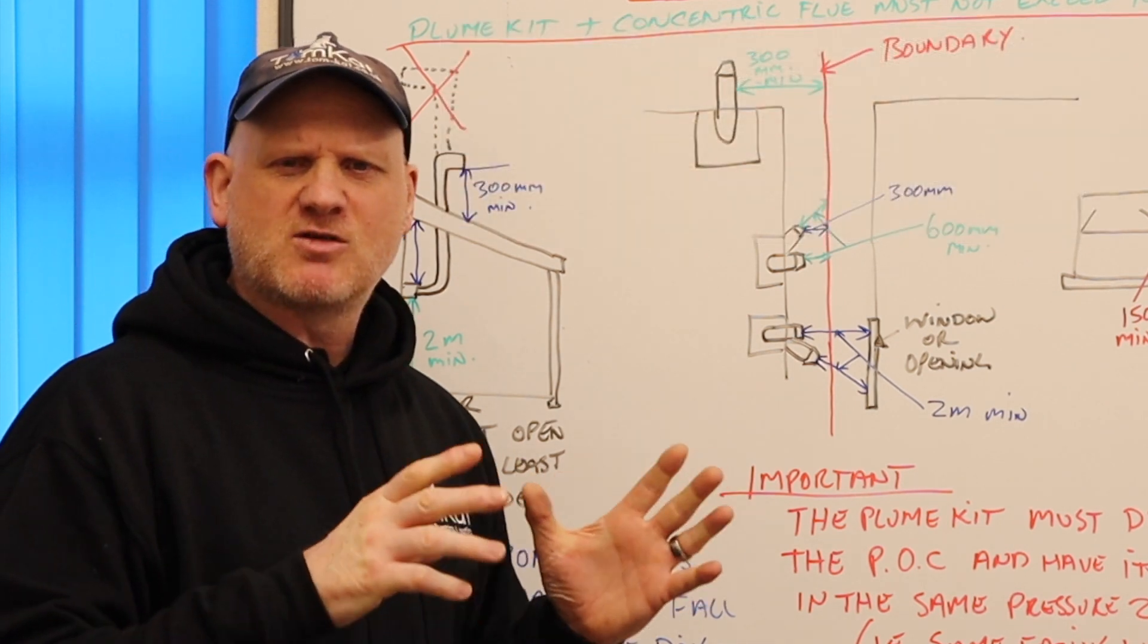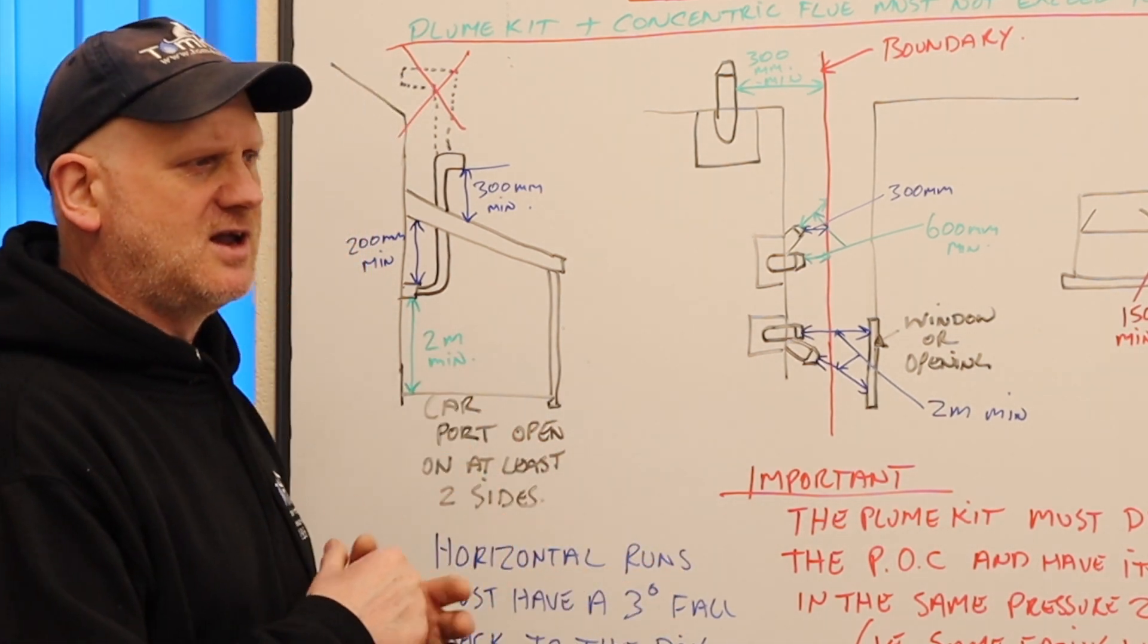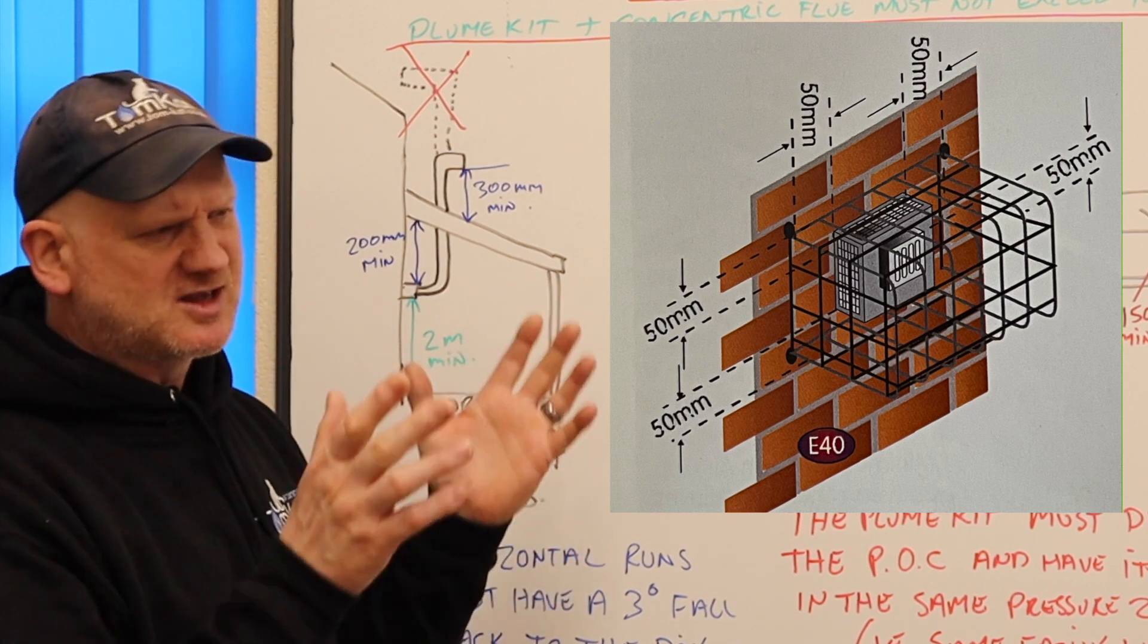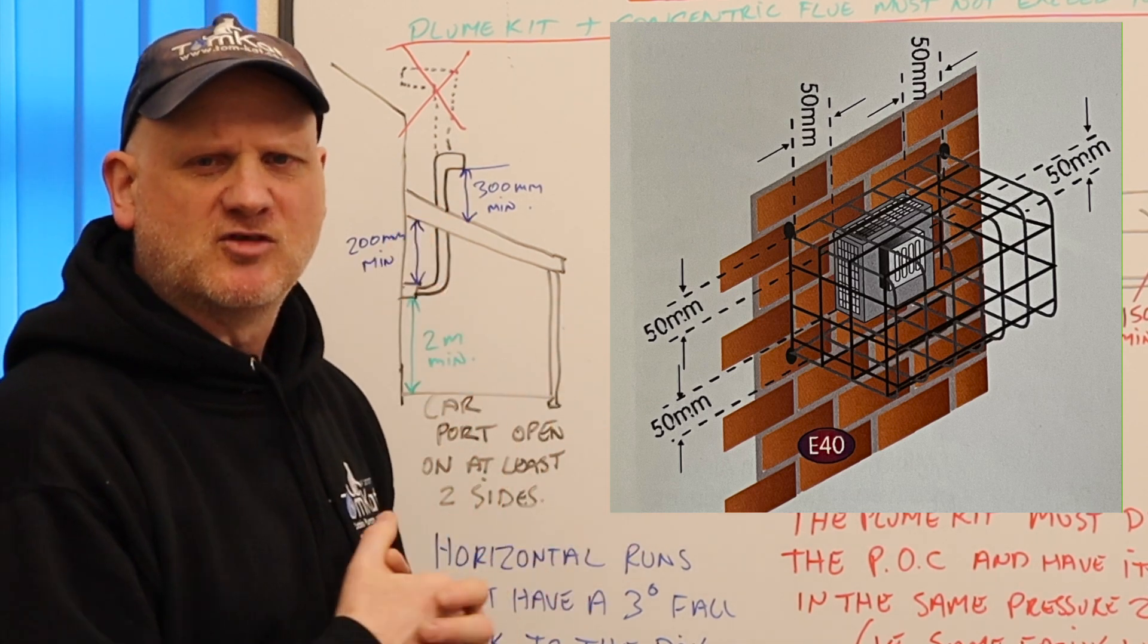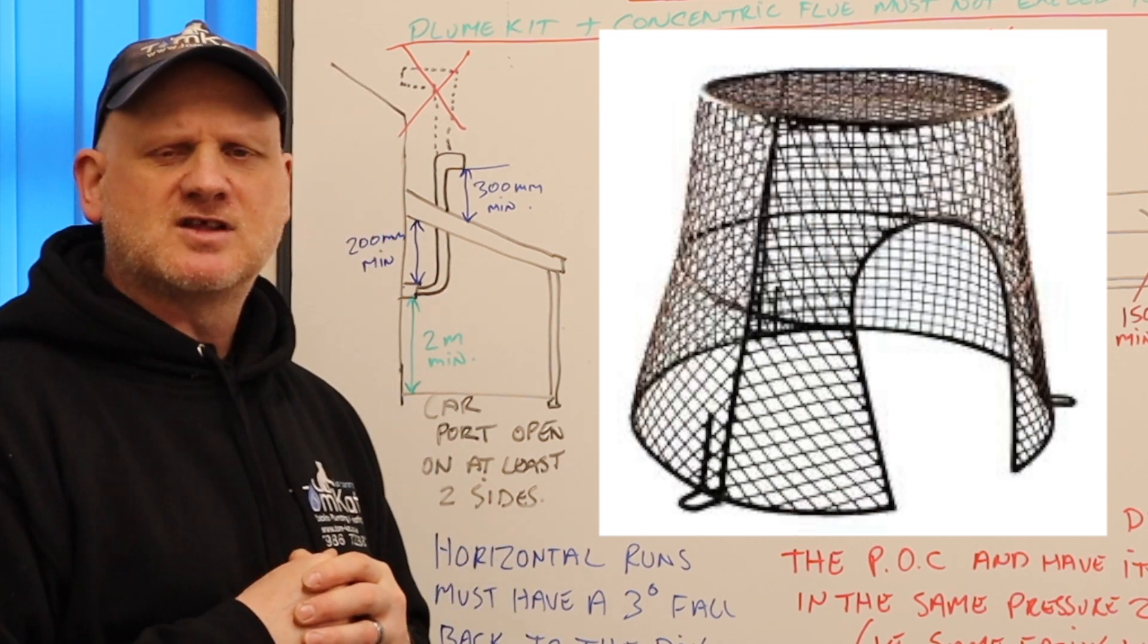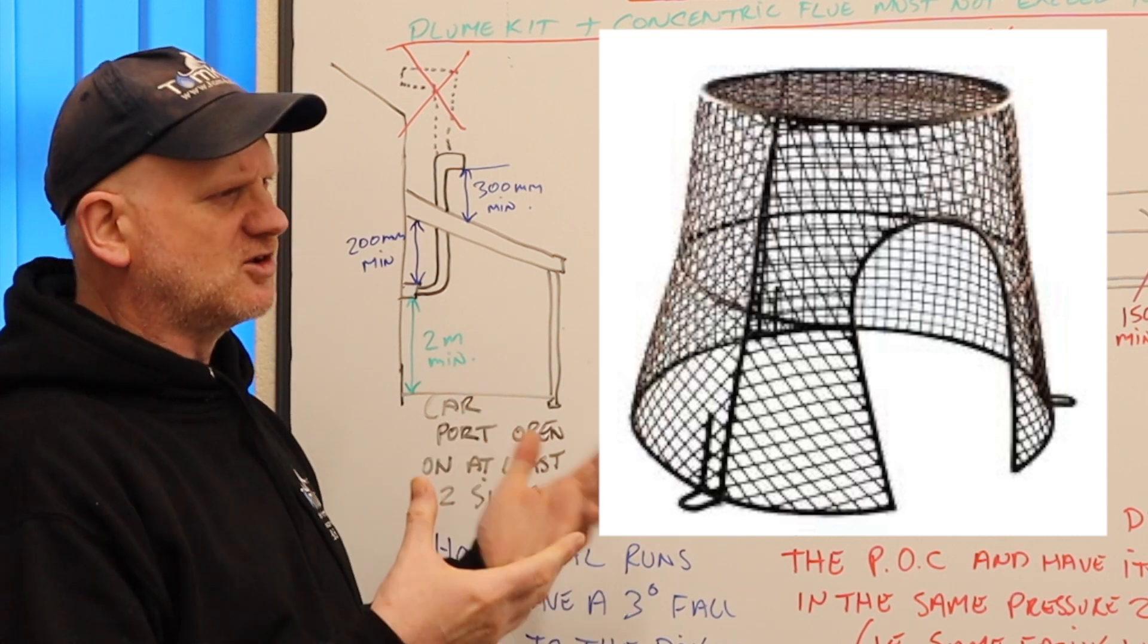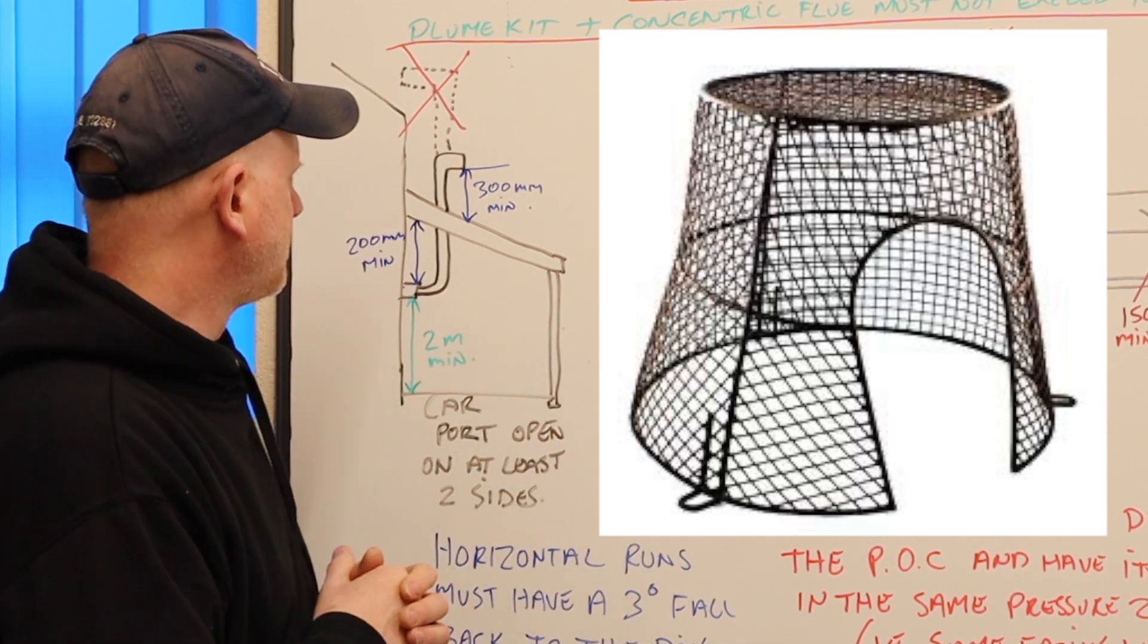But it's now there just to protect the flue system rather than us getting burned from it. But we still need to comply. It still needs to be 50 mil all the way around from the front. And we can get specialist terminal guards for this flue system. They're normally coated or they're made of stainless steel or they're plastic coated.